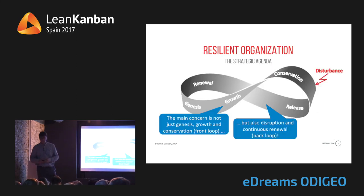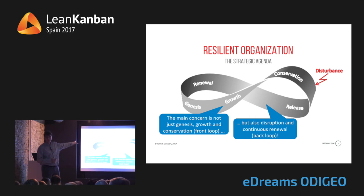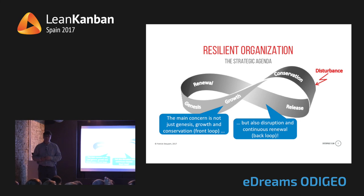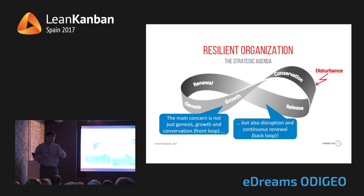In terms of resilience, it's not just about the front loop — genesis, startup, growth, scaling, and conservation — keeping your organization running. It's also about the back loop: what if your demand shifts? How are you going to cope with shifting demand? Not only at organizational level, but also at team level. At all levels we see this: it's not sufficient to deliver against the demand now — you also need to cope with shifting, uneven demand.